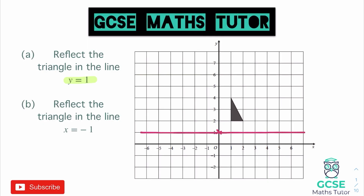The actual process of reflecting is quite nice and easy — we just need to pick a point. From this point here, we're going to count straight down to the line: that's 1 square away, and if we go 1 square away from that, we land just there. We repeat that for all of the points. The other bottom one is 1 square away from the line, and the final one up here is 3 squares away — so 1, 2, 3 squares away — gets us just down here. Joining that all up neatly with a pencil and a ruler, there's our first reflection.